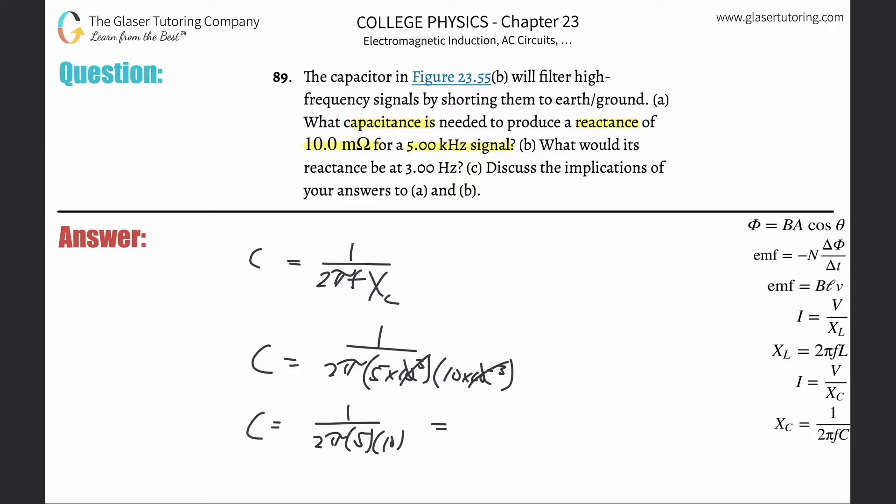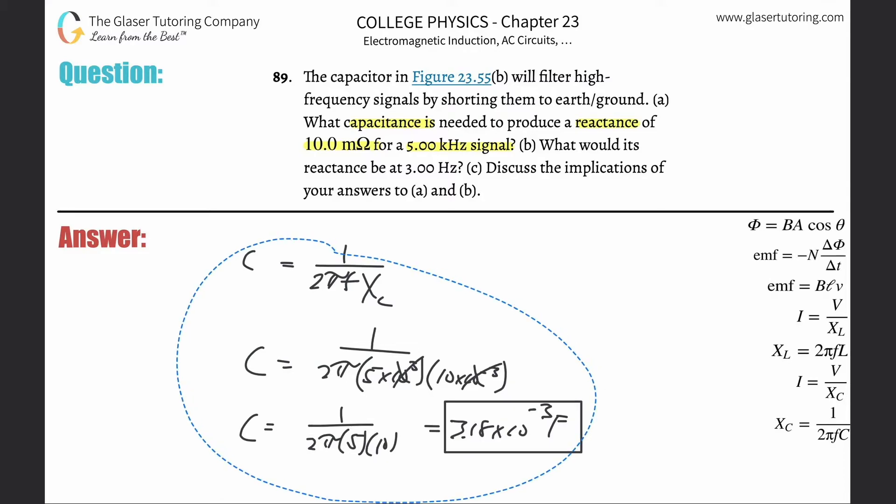Obviously you can simplify it from there. So 1 divided by—5 times 10 is 50 times 2 is 100—so it's basically 1 divided by 100 pi. So here the capacitance equals, let me put it in scientific notation, 3.18 times 10 to the minus 3. That's in terms of farads. So that takes care of letter A.